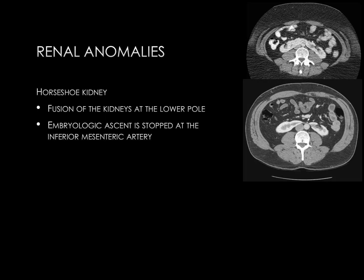At the right side of the slide, we see two axial images from two separate patients with horseshoe kidney. The connection in the midline may be comprised of renal parenchyma, as in the upper patient, or of a fibrous band, as in the lower patient. The lower patient also demonstrates the inferior mesenteric artery, indicated by the white arrow, which has stopped the ascent of the kidneys — positioned in the mid-abdomen rather than the upper abdomen.